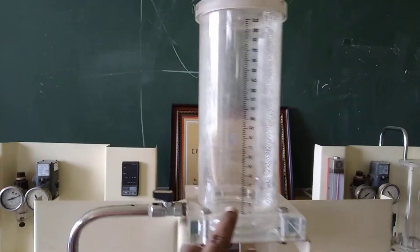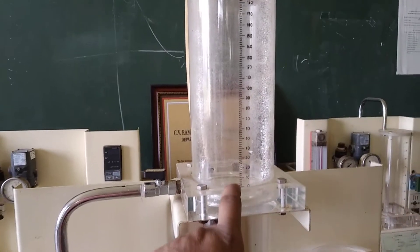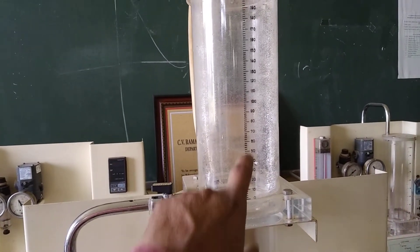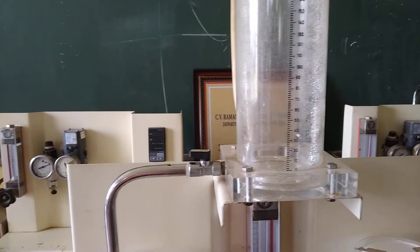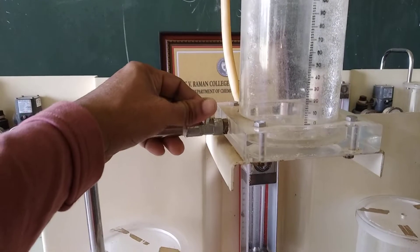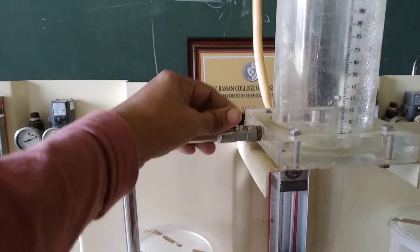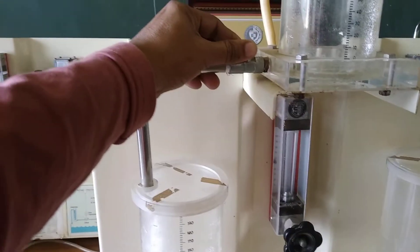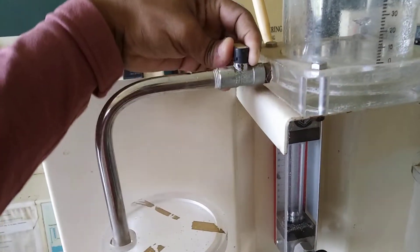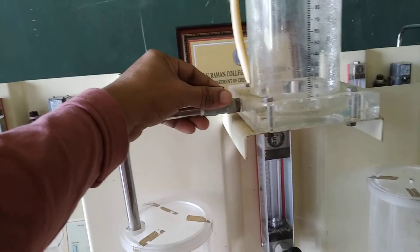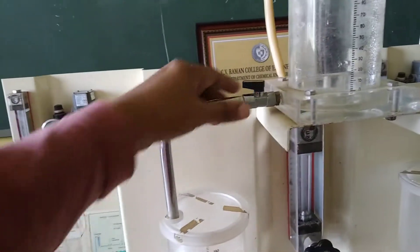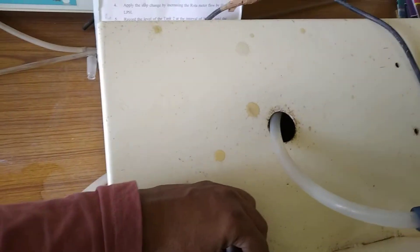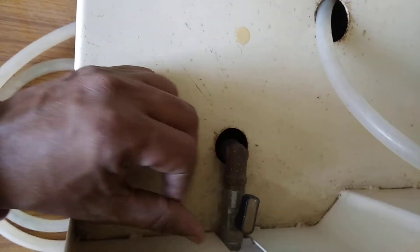After that, water will come to the upper tank and the level of the water will increase. At the same time, we have to keep in mind the resistance — this is known as resistance, the opening and closing. This is 100% open and 100% closed. You have to keep it partially open. Similarly, this valve also partially open or fully open — there is no problem for the first experiment.